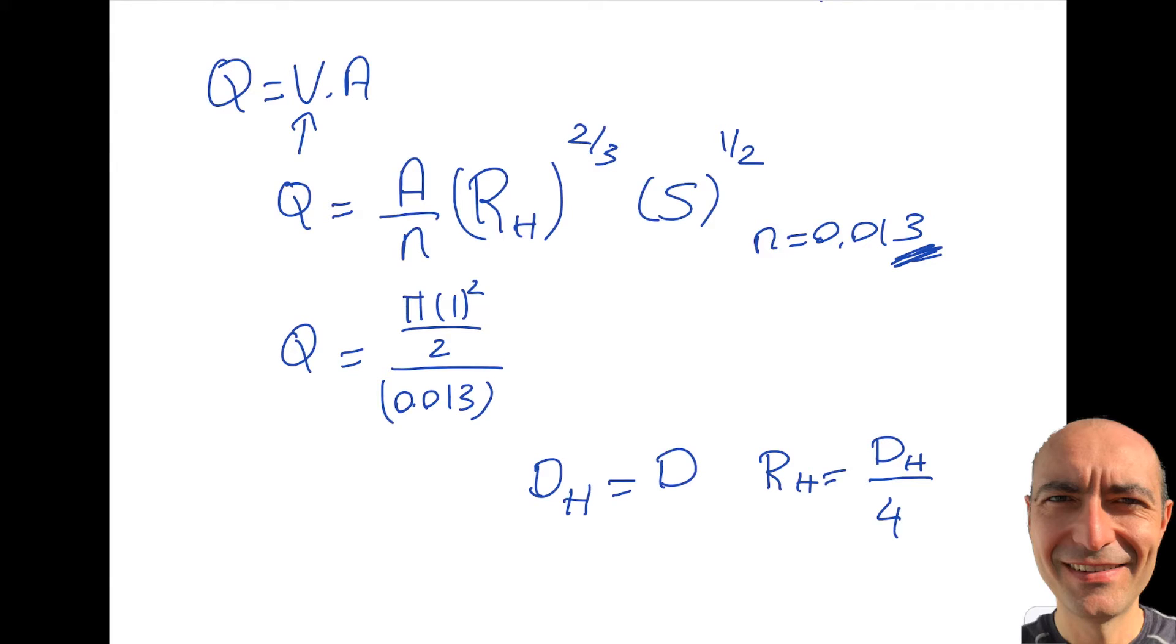This time, this is given as 2, so my R_H is half, half a meter. Let's write 0.5 to the power of 2/3, and the S is 0.01 to the power of 1/2. Once I punch this into my calculator, I will get 7.6 m³/s.